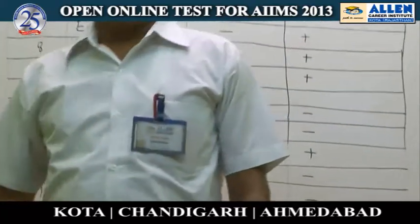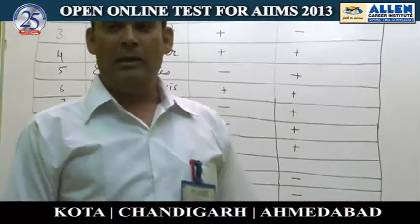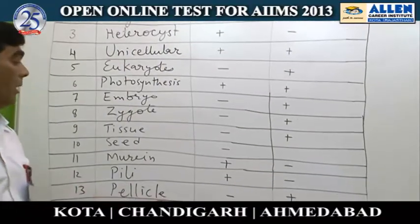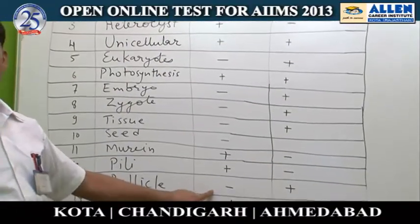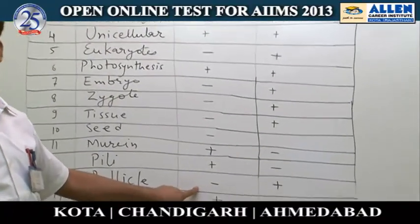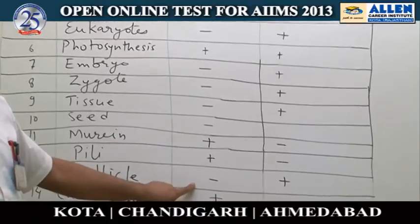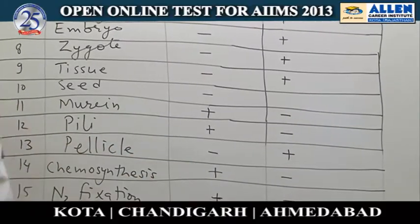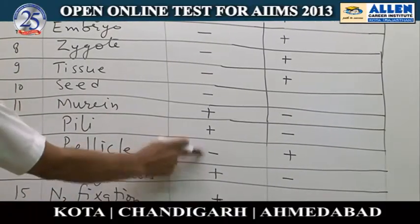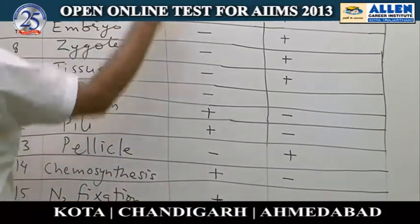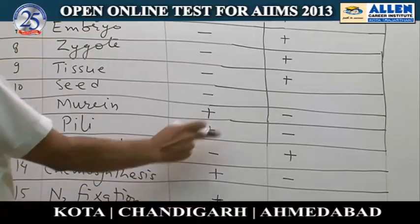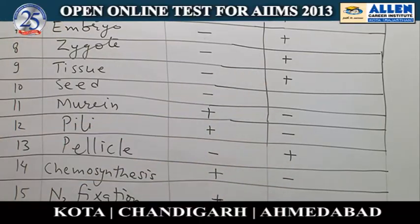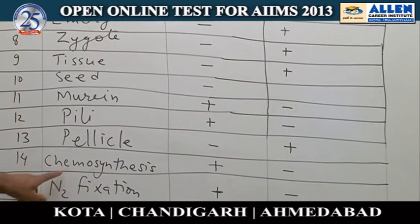Pellicle is a covering outside the cell membrane. Pellicle is NOT a character of Monera — pellicle is present in euglenoids. So pellicle is absent in Monera but present in other kingdoms.